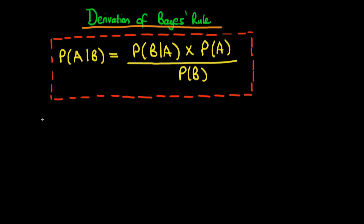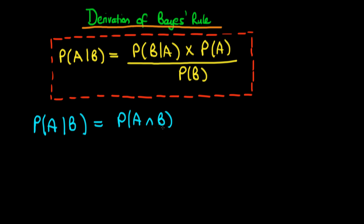What we're going to do is start off just using our rule for conditional probability, which is that the probability of A given B occurring is equal to the probability of A intersection with B — so the probability of A and B occurring — divided through by the probability of B.